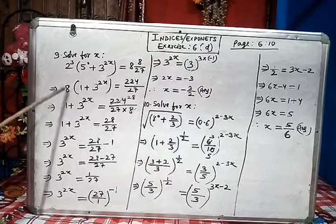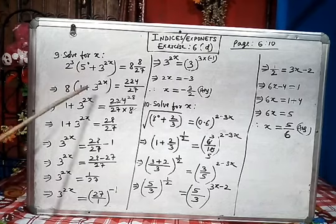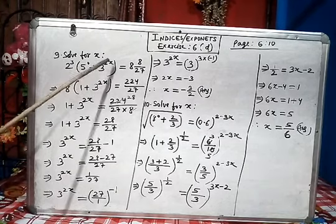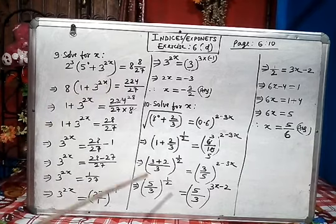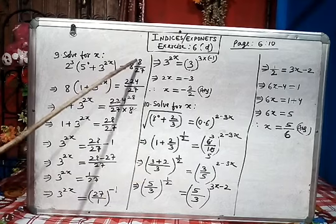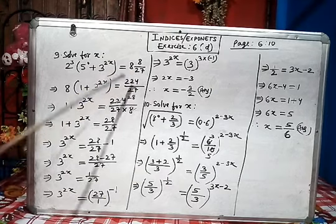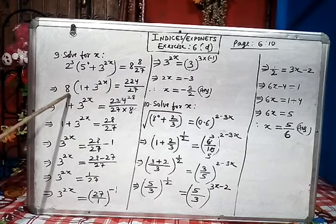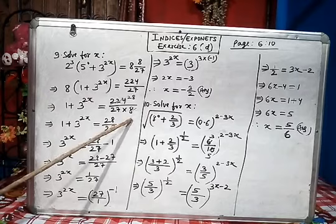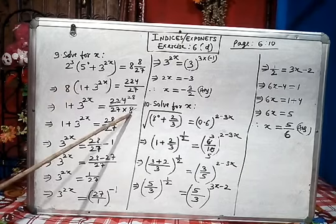2 cube is 8. 5 power 0 is 1 because anything power 0 is 1. Plus 3^(2x) is same and here 27 times 8 is 216, plus 8 is 224. So 224/27. Now this 8 I am going to remove from this place and bring on the right hand side. 8 is multiplying, bracket means multiplication. Anything multiplication on the left hand side becomes division on the right hand side.